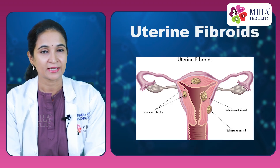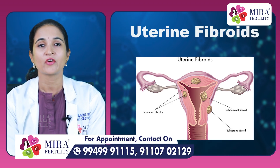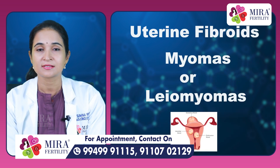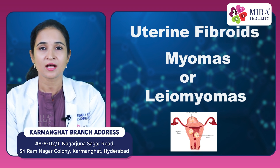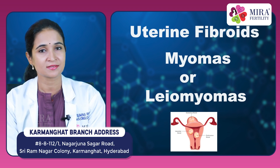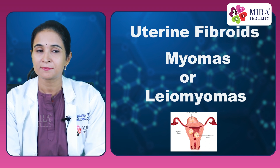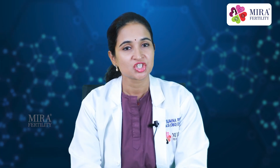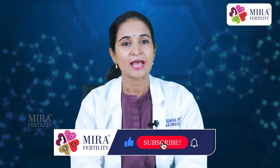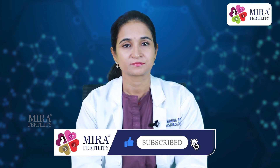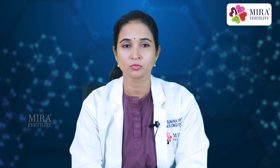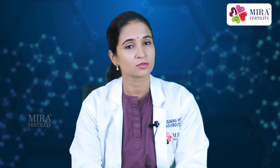Uterine fibroids are benign, that is non-cancerous, tumors of the muscle tissue in the uterus. They are also called myomas or leiomyomas. Fibroids occur when a single muscle cell in the wall of the uterus multiplies and grows to form a non-cancerous tumor. Fibroids can change the shape or size of the uterus and sometimes the cervix, that is the lower part of the uterus. Women usually have more than one fibroid tumor, but single fibroids are also possible.